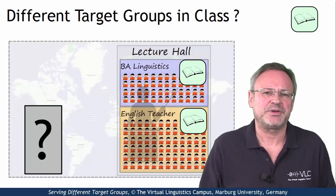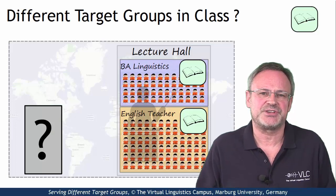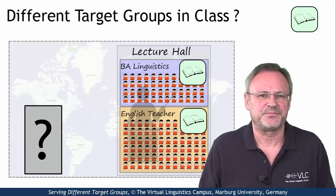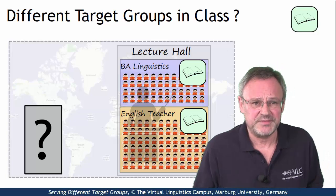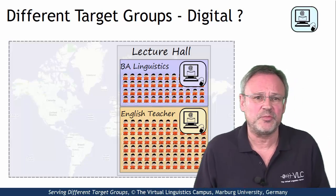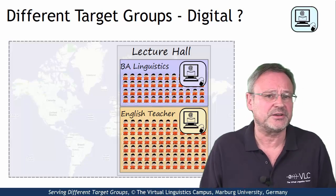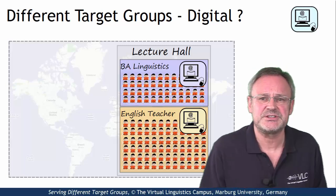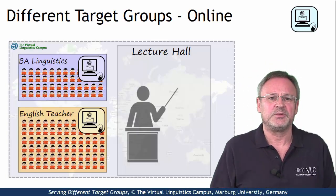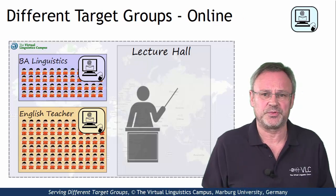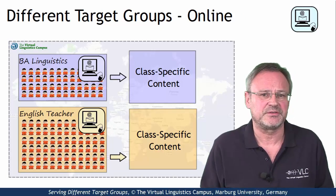So, how can digitization help in all these cases? Well, with a digital teaching and learning model, we have no problem in target group differentiation. Since content delivery is now online, we can serve each target group with its specific content.